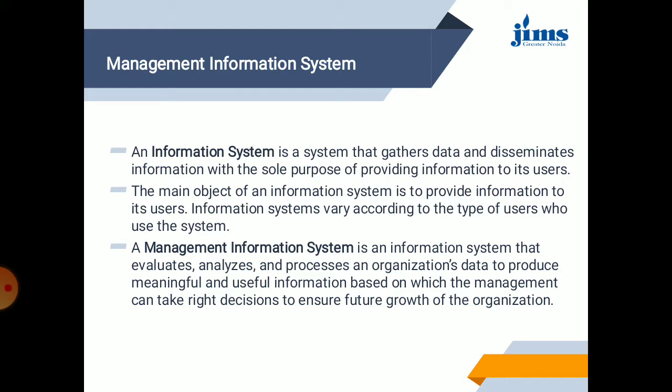The main objective of an information system is to provide information to all users. Information systems vary according to the type of users who use them — there are various types of information systems depending on the user. A Management Information System is a system that evaluates, analyzes, and processes organizational data to produce meaningful and useful information, based on which management can take the right decision to ensure future growth of the organization.